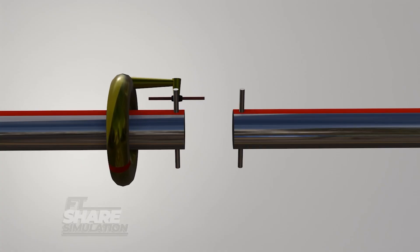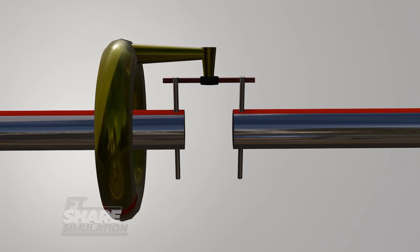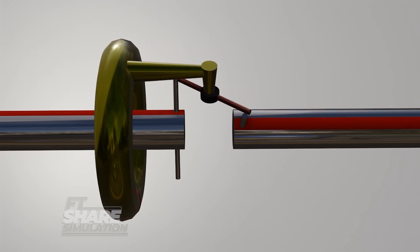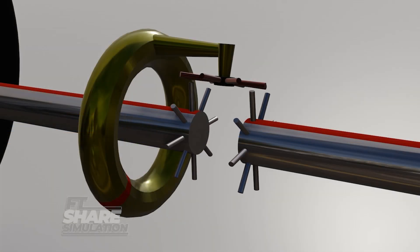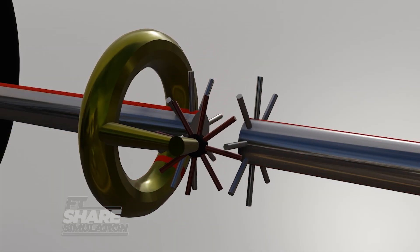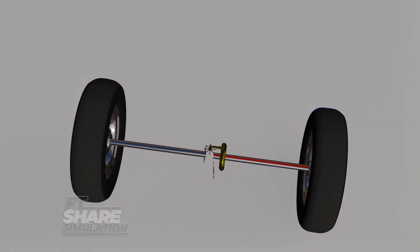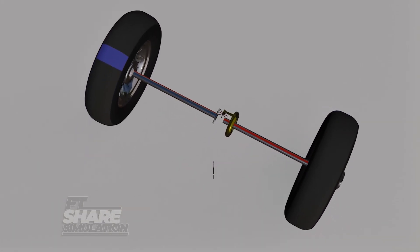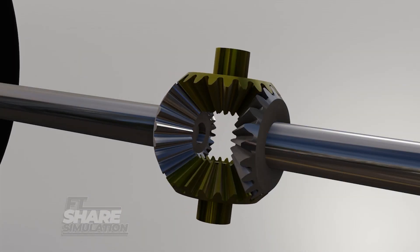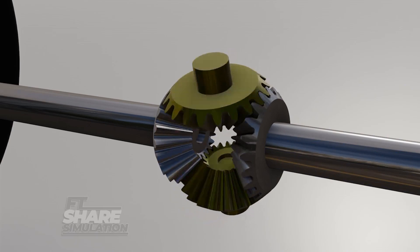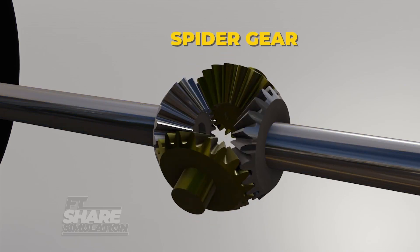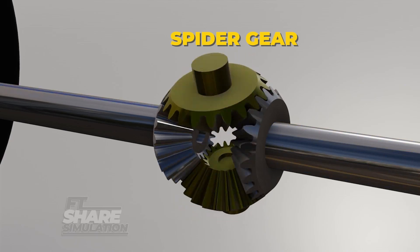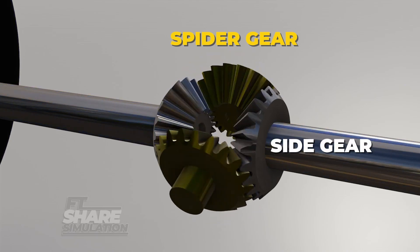Here, we face another problem. When the wheels rotate too far, the connecting shaft could slip out, causing the wheels to stop rotating. To solve this, the number of spokes is increased, allowing both wheels to rotate freely and continuously. Finally, the wheels can rotate perfectly when turning. Once the wheels can rotate properly, these spokes are refined into gears. The spokes on the rotating shaft become spider gears, and the spokes on the shaft connected to the wheels are called side gears.